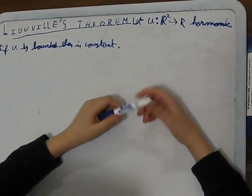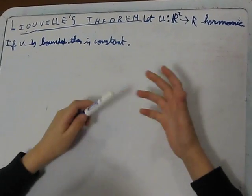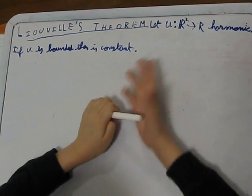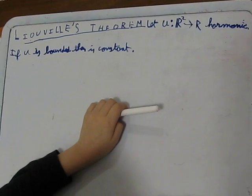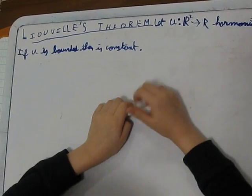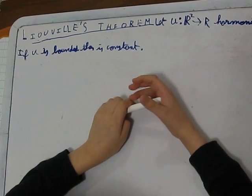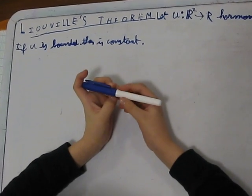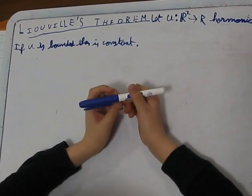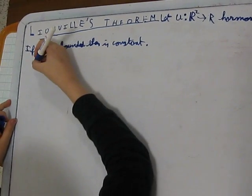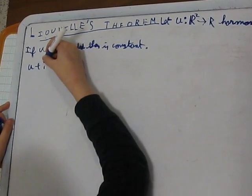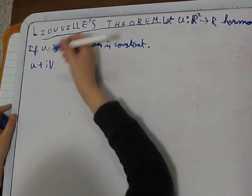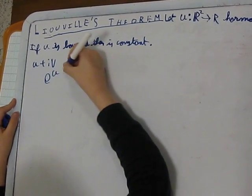How can we prove this? Well, the idea is, let's construct a function that is entire, made out with U. But since U is harmonic in all R², so there exists a V that is its harmonic conjugate. So, if we consider U plus iV is analytic, then maybe V is not bounded. But we consider this function.